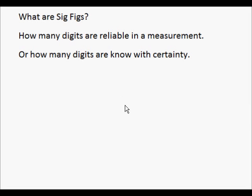So, what are sig figs? Sig figs are how many digits in a measurement are reliable, or in other words, how many digits are known with certainty.